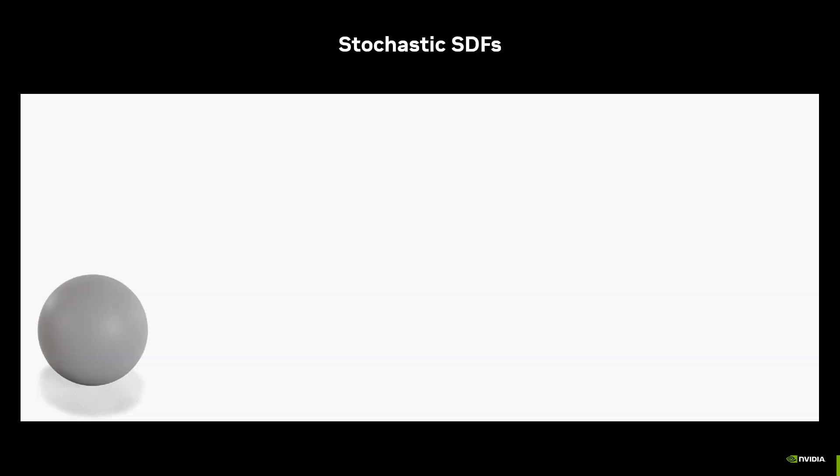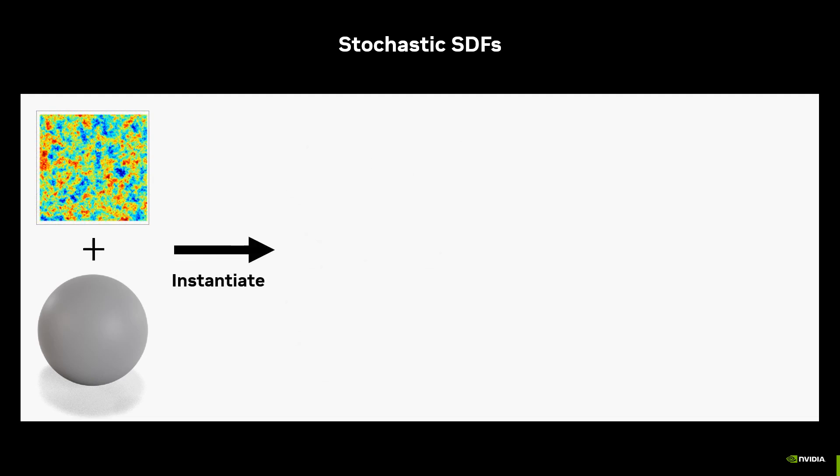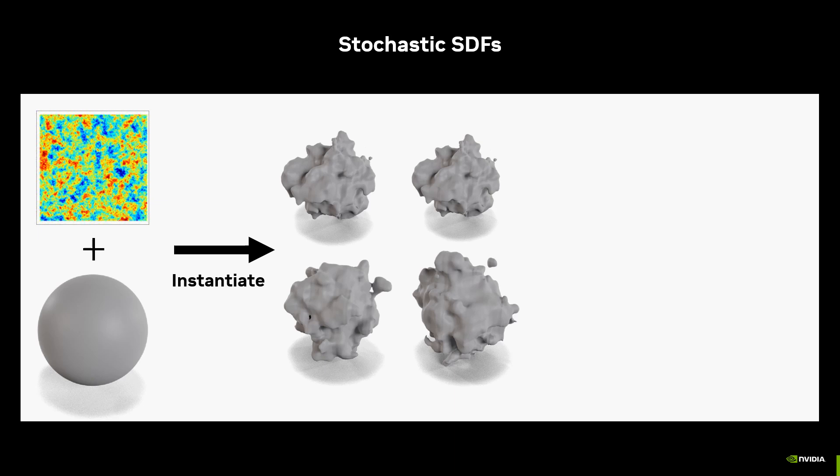The model we introduce is equivalent to a signed-distance field to which you add a noise field. Each seed leads to a different surface, and we render the average reflectance from all possible random surfaces.